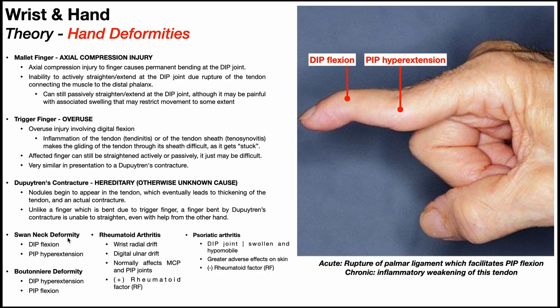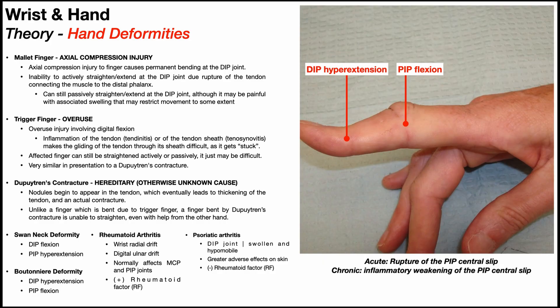Very similar but sort of opposite is the Boutonniè re deformity. In the swan neck we had DIP flexion; in the Boutonniè re deformity we have DIP hyperextension. And whereas in the swan neck we had PIP hyperextension, in the Boutonniè re deformity we have PIP flexion. Basically the relative positions of these two joints just flip — they're opposite one another.